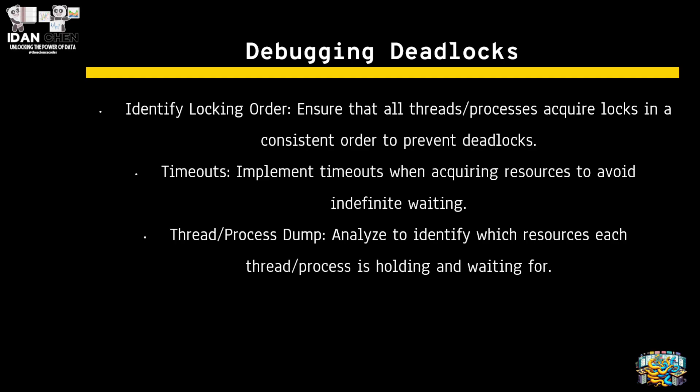How can you debug deadlocks? First, identify a locking order — ensure that all threads or processes acquire locks in a consistent order to prevent deadlocks. Second, use timeouts when acquiring resources to avoid infinite waiting. As we saw in my code, you can add a time.sleep of a small amount, like 0.1 seconds. Finally, use a thread or process dump to analyze your CPU or I/O.